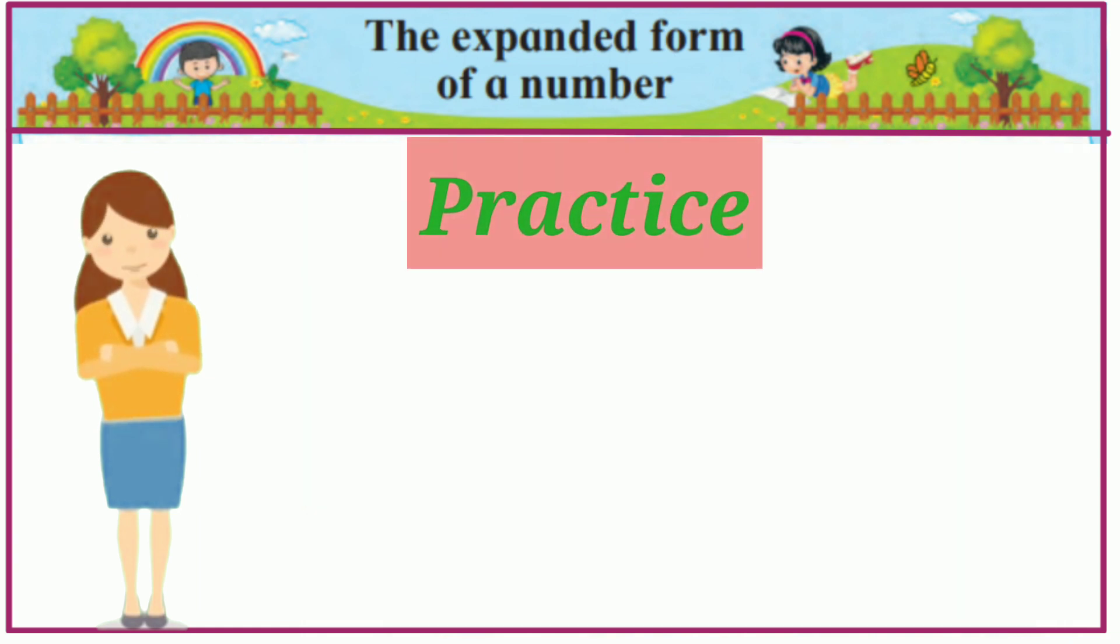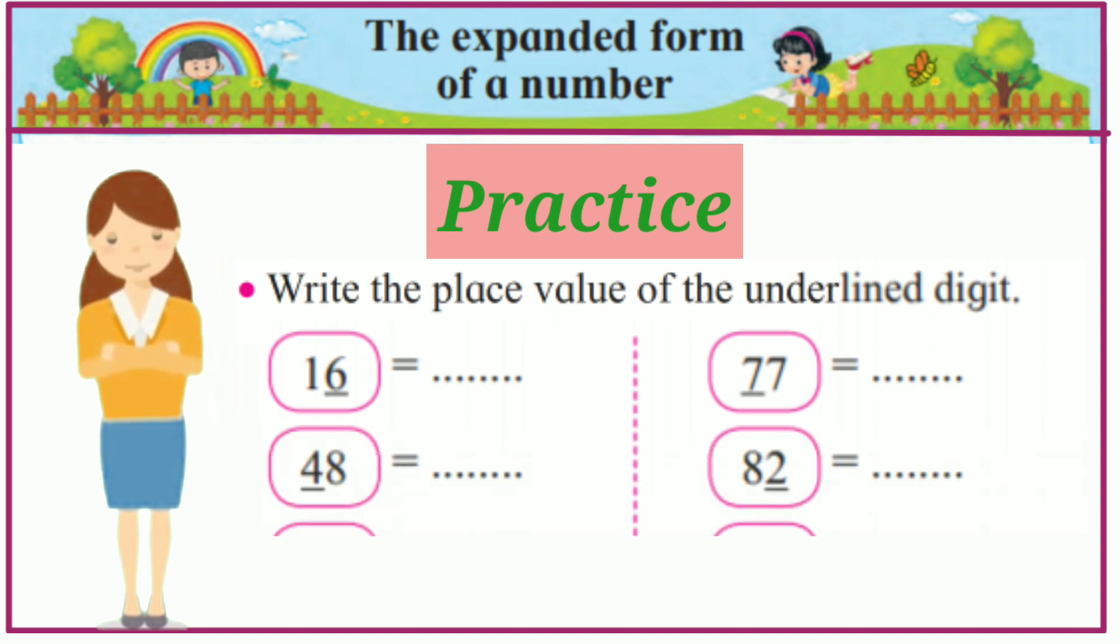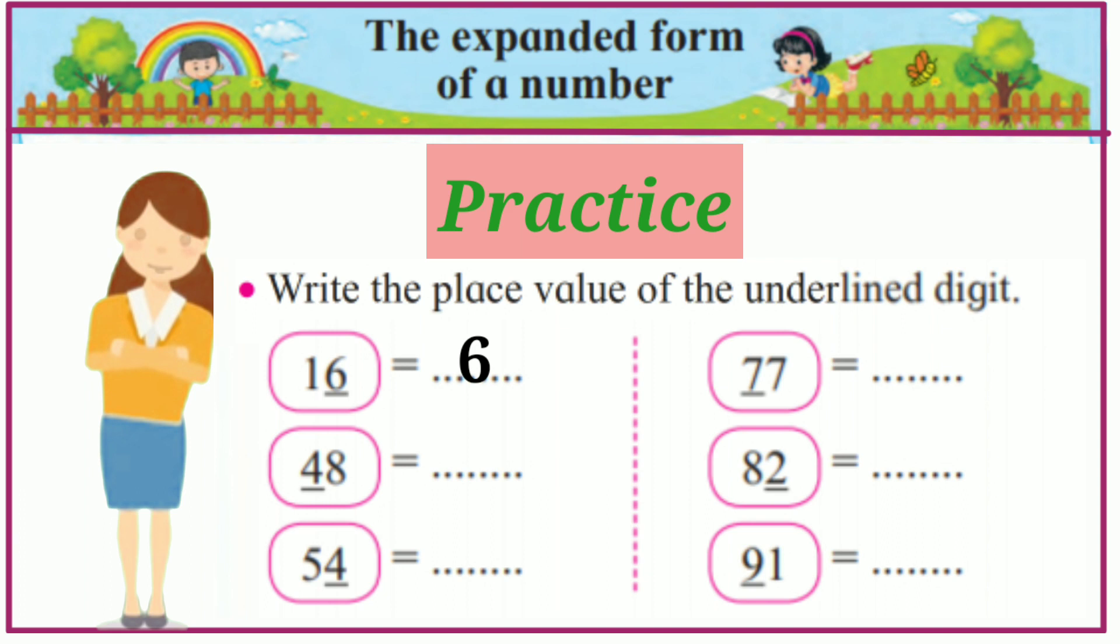Practice. Write the place value of the underlined digit. 16. The place value of 6 is 6. 48. The place value of 4 is 40. 54. The place value of 4 is 4.